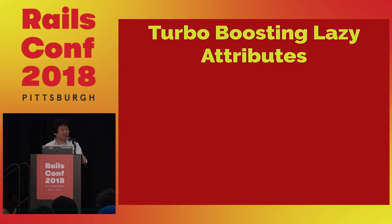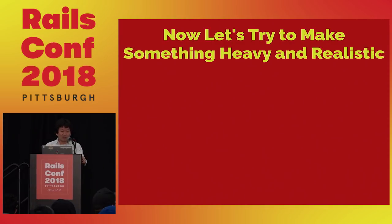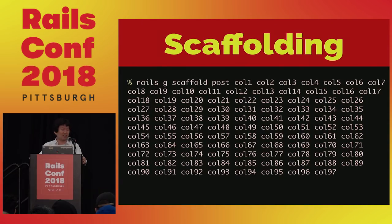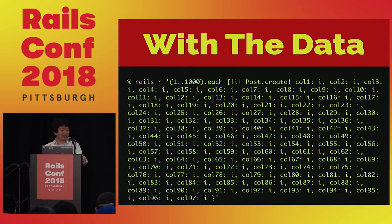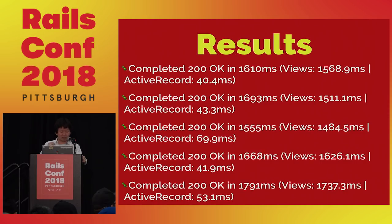Next topic: Lazy attributes. Let's move inside the view code and find what's slow there. I created a realistic example: scaffolding 100 columns with 1,000 records for those 100 columns — very realistic. Running this with curl five times, it takes around 1.6 to 1.7 seconds per request, and the time is mostly spent in views.